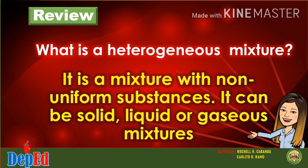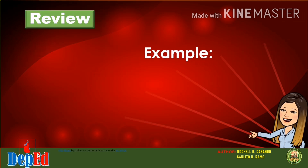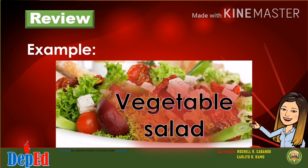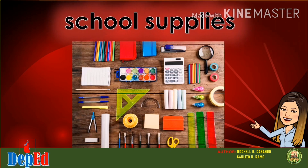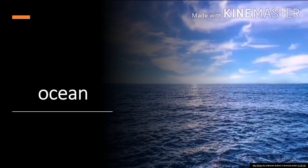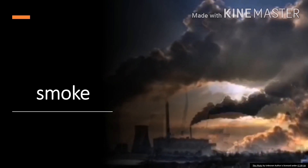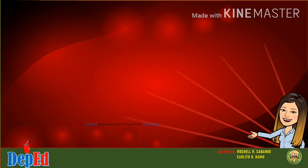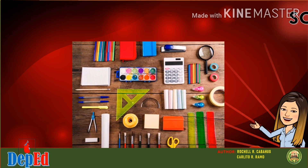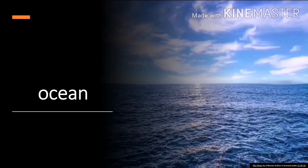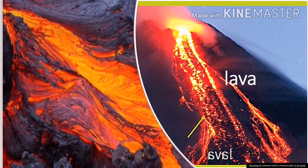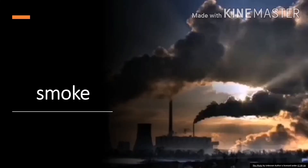What is a heterogeneous mixture? It is a mixture with non-uniform substances. It can be solid, liquid, or gaseous mixtures. For example: vegetable salad, school supplies, ocean, lava, and smoke. Vegetable salad and school supplies are examples of solid heterogeneous mixtures. Ocean and lava are examples of liquid heterogeneous mixtures, while smoke is a gaseous heterogeneous mixture.